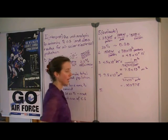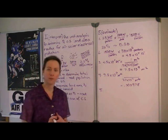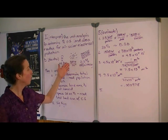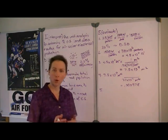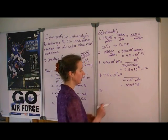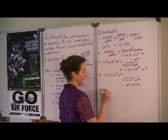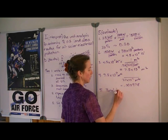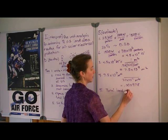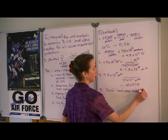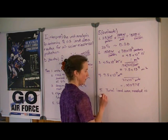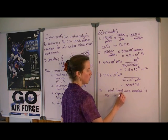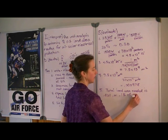As we consider this and how to report our final answer, let's look back at what we were given. We have two significant digits here, one significant digit here, one here. Let's report our answer to one significant digit, which means we're going to round it to total land area needed is 0.001 or 0.1 percent of U.S. land area.